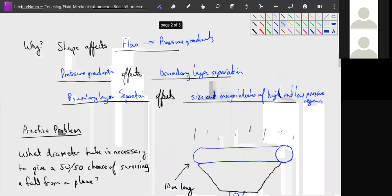So if we remember from our last lecture, shape affects drag because it affects the flow, and flow is intimately related to our pressure gradients. Pressure gradients on the object affect when boundary layer separation occurs, and boundary layer separation affects the size and magnitude of high and low pressure regions. These high and low pressure regions tremendously affect the drag on blunt objects.